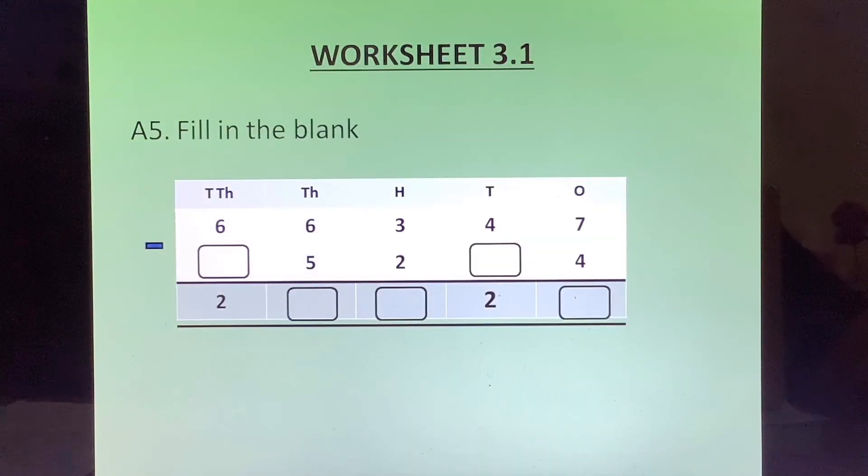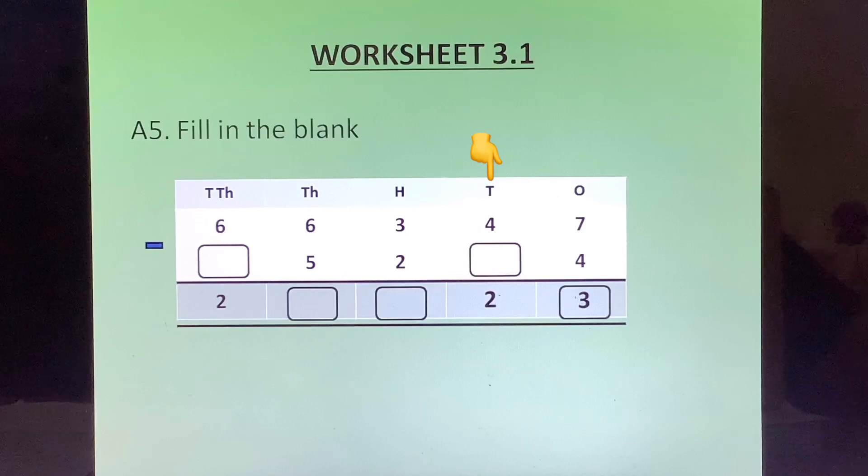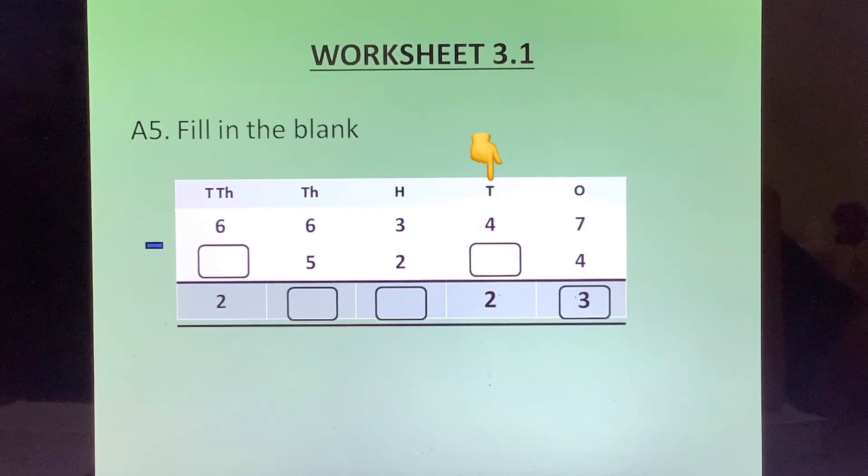Fifth answer: Fill in the blanks. We start with the ones column. 7 minus 4 is 3. Now 4 minus what will be equal to 2? For this we will subtract 2 from 4 and we will get 2, so we will write 2 here. Then hundredths column, 3 minus 2 is 1. Thousandths column, 6 minus 5 is 1. Then ten thousandths column, we have 6 minus blank is equal to 2. So we have to figure this out. For this we will subtract 2 from 6. 6 minus 2, which will give us 4. We will write 4 in this blank.